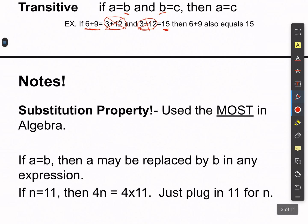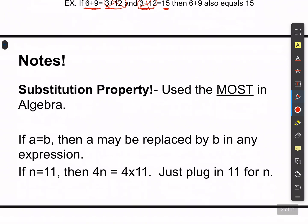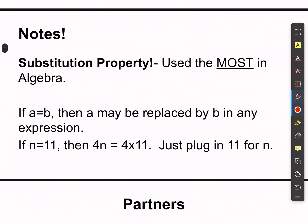The substitution property — the most used in algebra — says if a equals b, then a can be replaced by b in any expression. For instance, if I know that n equals 11 and I have the expression 4 times n, I can replace n with 11 and write 4 times 11. That's called substitution.